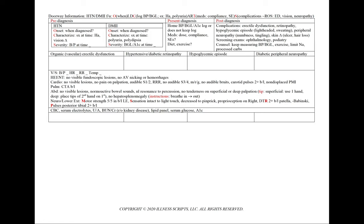For all cases, let's order a CBC, serum electrolytes, urinalysis, BUN and creatinine to rule out kidney disease, and a lipid panel, serum glucose, and A1C. In organic erectile dysfunction, we'll see a loss of the early morning erection, and we could see associated chest pain, claudication, and hair loss. Our patient will have a history of hypertension, diabetes, and smoking.